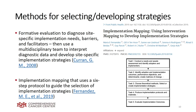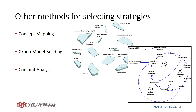There are specific methods to selecting and developing strategies. Formative evaluation can diagnose site-specific needs, barriers and facilitators, using a multidisciplinary team to interpret data and develop site-specific strategies. You could also use implementation mapping, which uses a six-step protocol to guide the selection of implementation strategies. Some other methods include concept mapping, a mixed methods approach that organizes ideas of a group through brainstorming to form a common framework — which is in fact what the ERIC study used to come up with categories of implementation strategies.